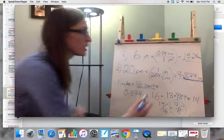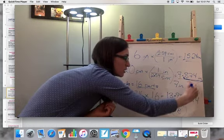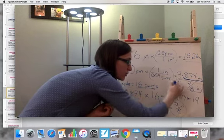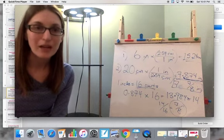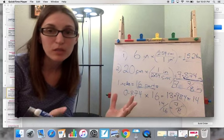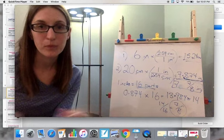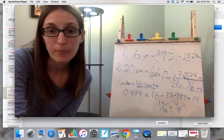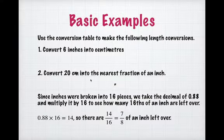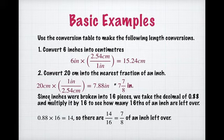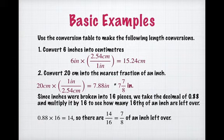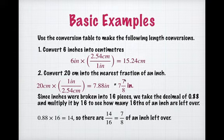Now reduce the fraction 14/16: both are divisible by 2, so 14 ÷ 2 = 7 and 16 ÷ 2 = 8. So our final answer is that 20 centimeters equals 7 and 7/8 inches. It's close to 8, but if you were actually measuring for accuracy — like on those worksheets with the ruler — you'd measure 7 and 7/8 inches. That's the basic unit conversion process.